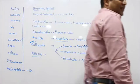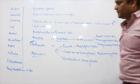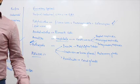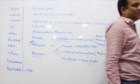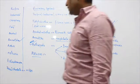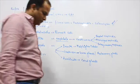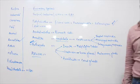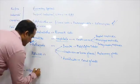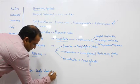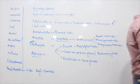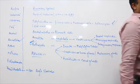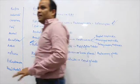In Echinoderms, feather-like gills are present in the mantle cavity. Excretion takes place through the water vascular system. A single glomerulus is situated for excretion. So in Echinoderms, the water vascular system serves the excretory function.